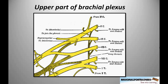The branches coming from the roots are the dorsal scapular nerve, which supplies the rhomboids and levator scapulae; the long thoracic nerve, which supplies the serratus anterior muscle; the nerve to subclavius, which supplies the subclavius muscle lying anterior to the subclavian artery; and finally the suprascapular nerve, which supplies the supraspinatus and infraspinatus.